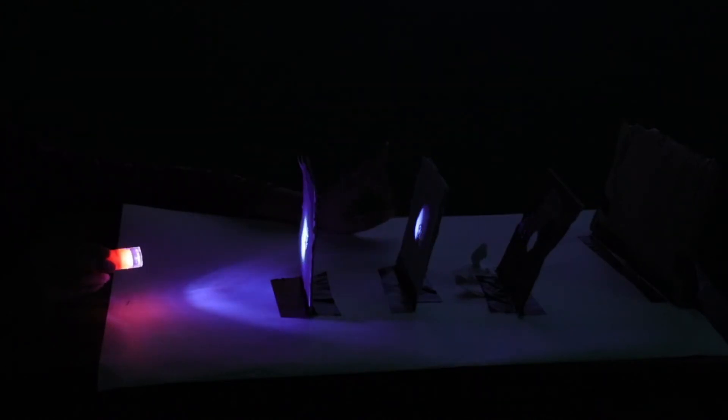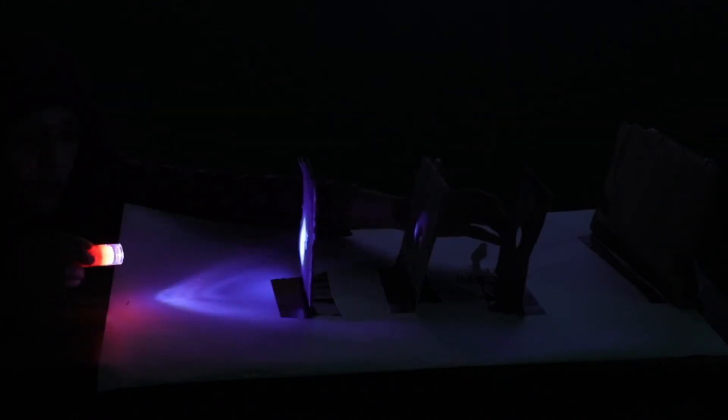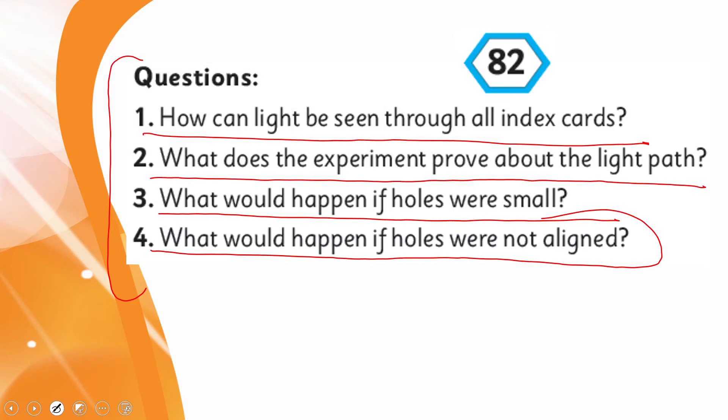Again we will switch off the lights. Can you see the reflection on the last cardboard? You cannot see the reflection. Light is not falling there because we moved the last card. All the light is going in a straight line through all the holes.